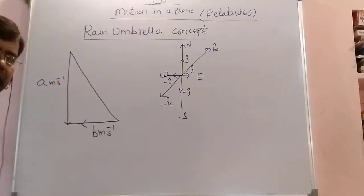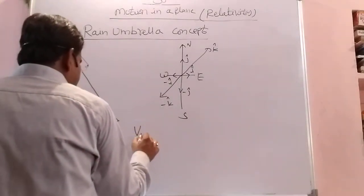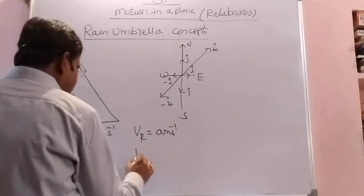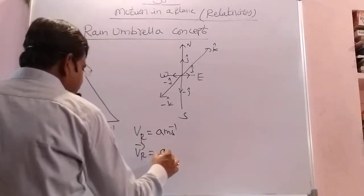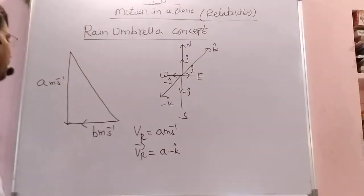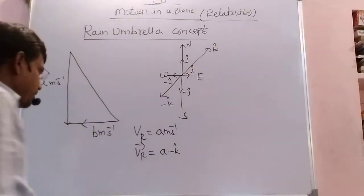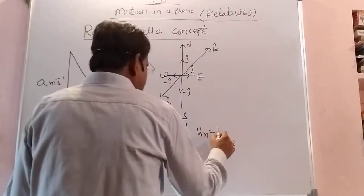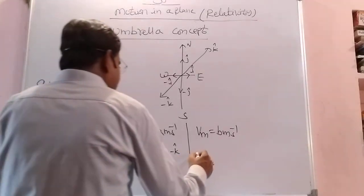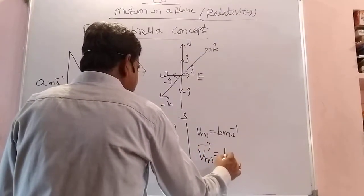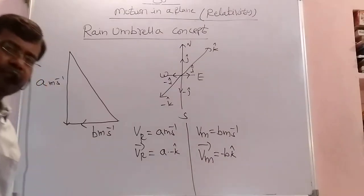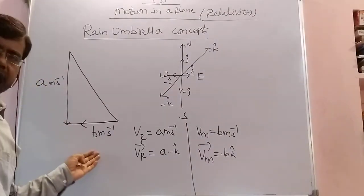According to vector concepts, the velocity of the rain is 'a' meters per second. In vector form, this is written as 'a' into minus k, since rain falls downward. Similarly, the man is travelling along the west direction, so the velocity of the man is 'b' meters per second, written as minus b into k in vector form. The magnitude of rain velocity is 'a' and the magnitude of man's velocity is 'b'.